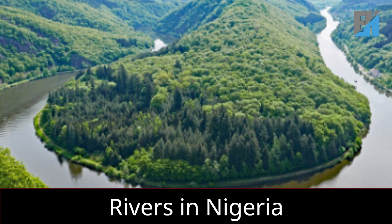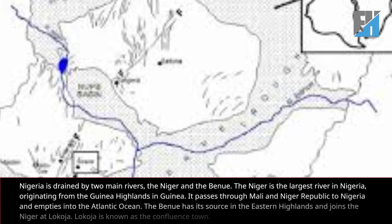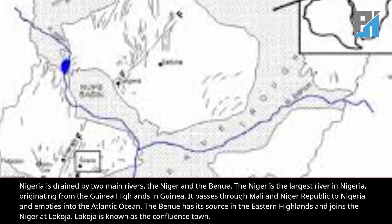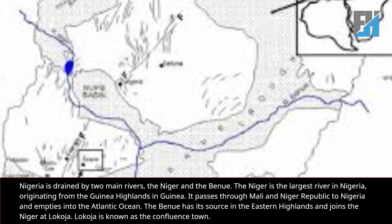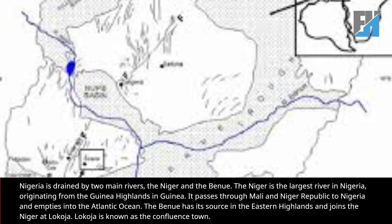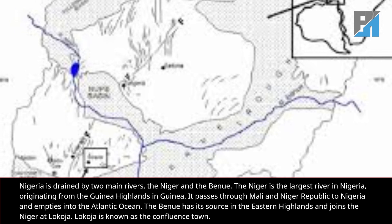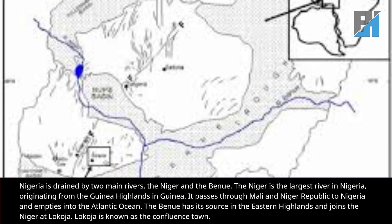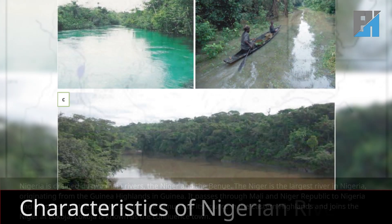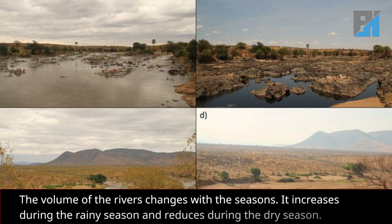Nigeria is drained by two main rivers: the Niger and the Benue. The Niger is the largest river in Nigeria, originating from the Guinea Highlands in Guinea. It passes through Mali and Niger Republic to Nigeria and empties into the Atlantic Ocean. The Benue has its source in the Eastern Highlands and joins the Niger at Lokoja, which is known as the confluence town.